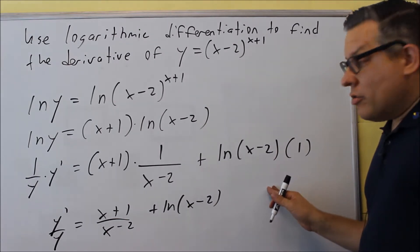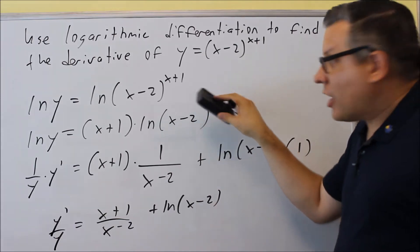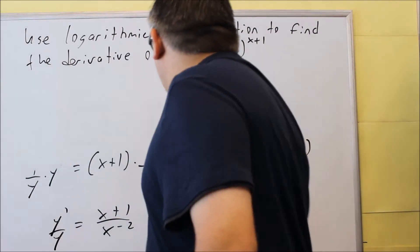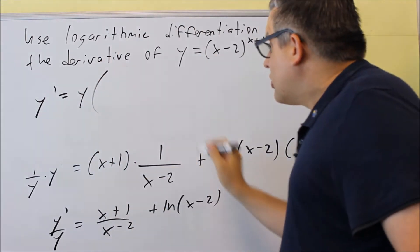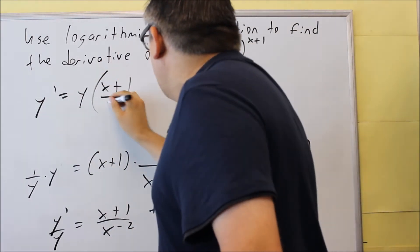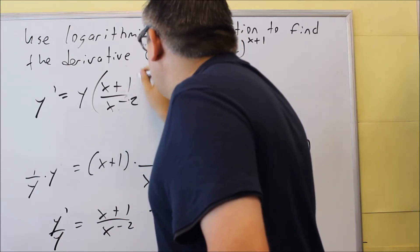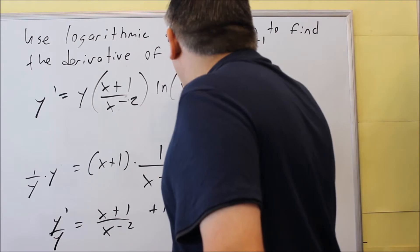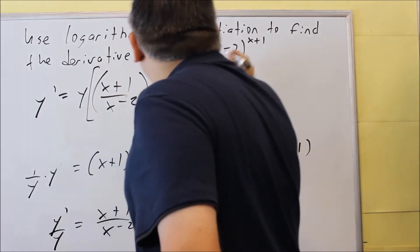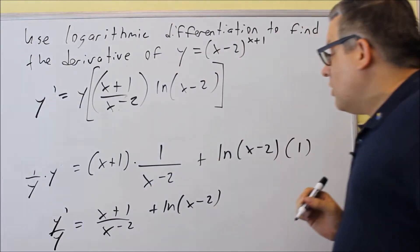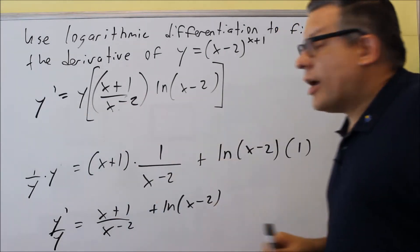Now the last thing we want to do is multiply both sides by Y so we can get Y-prime by itself. So we get Y-prime equals Y times the whole expression: X plus 1 over X minus 2, plus natural log of X minus 2, all inside brackets, multiplied by Y.